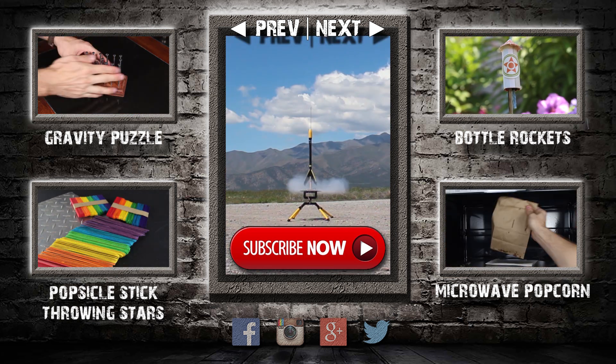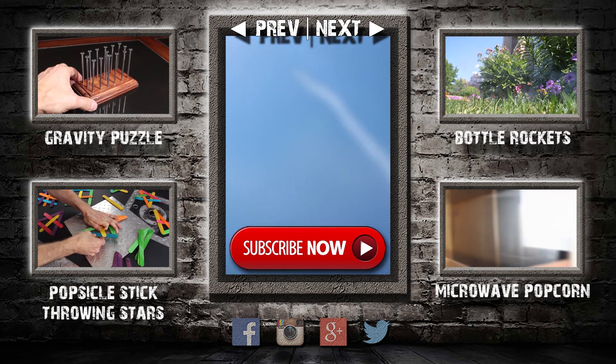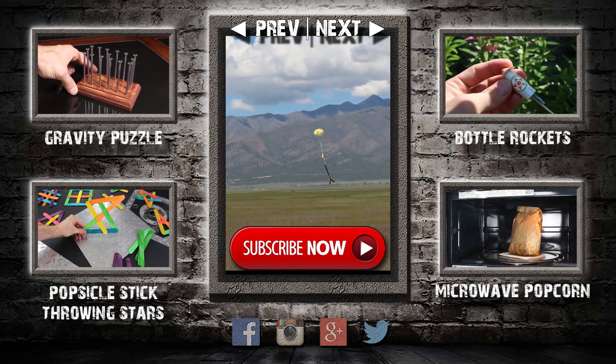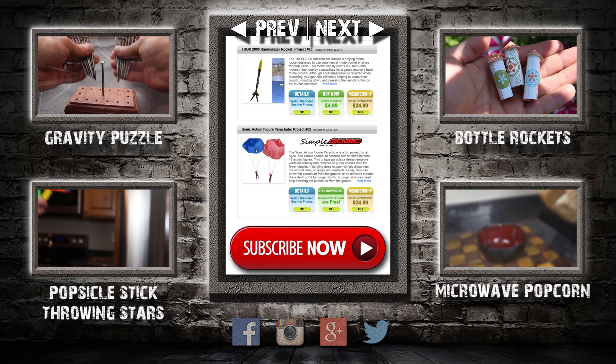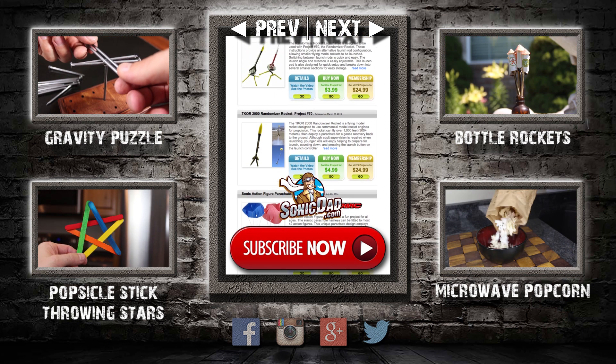Together, Richie and I designed a really cool launch pad, the randomizer rocket, and a recovery parachute that all work impressively well. We've done around 50 launches so far, and he's already got detailed videos and instructions on how to make them at sonicdad.com.